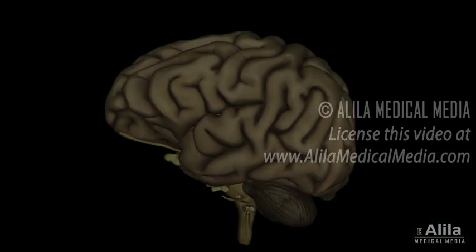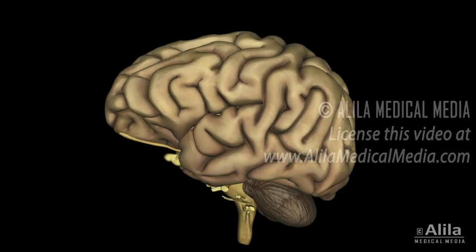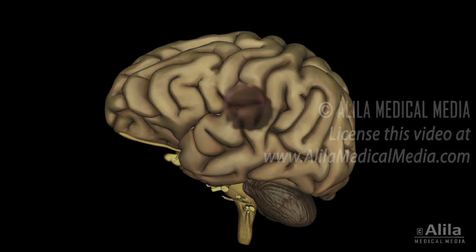From the clinical viewpoint, neurons have little capacity for renewal and, therefore, rarely form tumors. On the contrary, glial cells are capable of dividing throughout life and are the primary source of brain tumors.